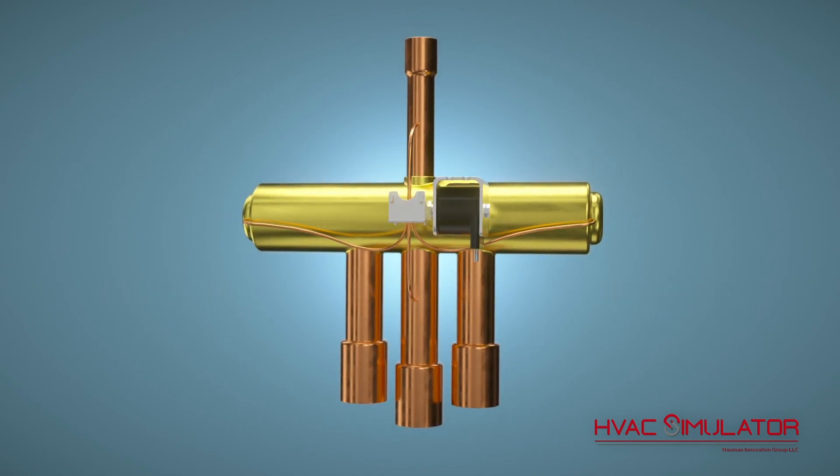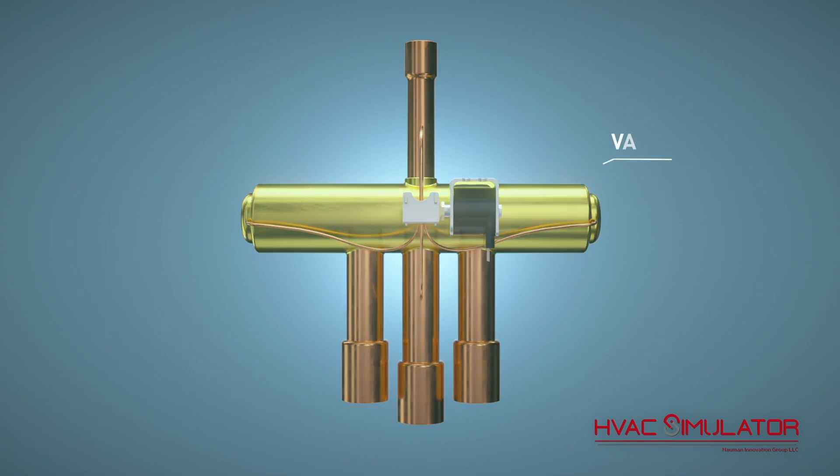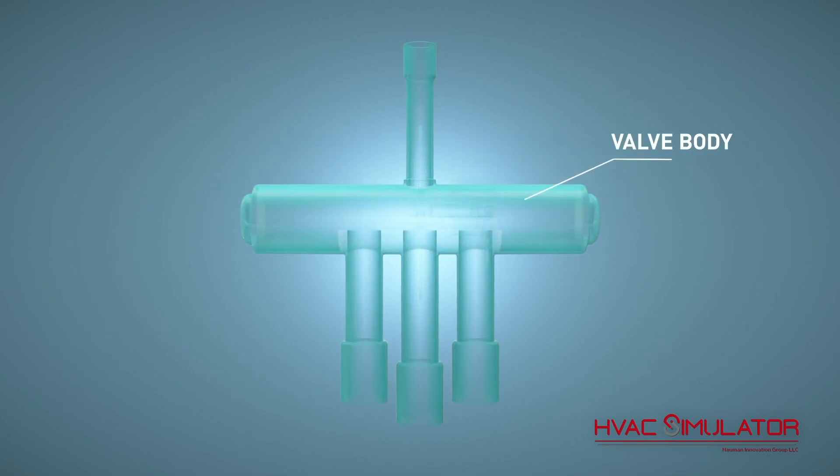The components of the reversing valve are the valve body, which is the main housing of the reversing valve. It contains various internal components and passages that control the refrigerant flow.